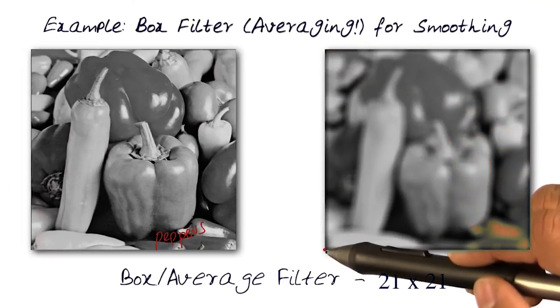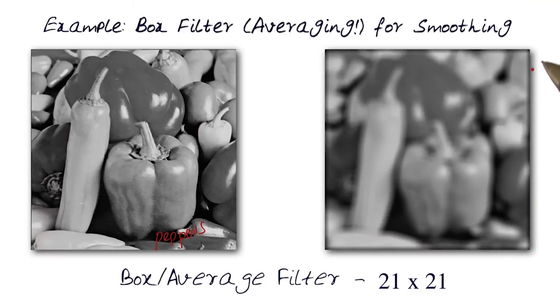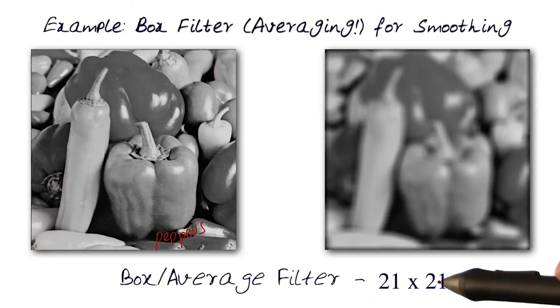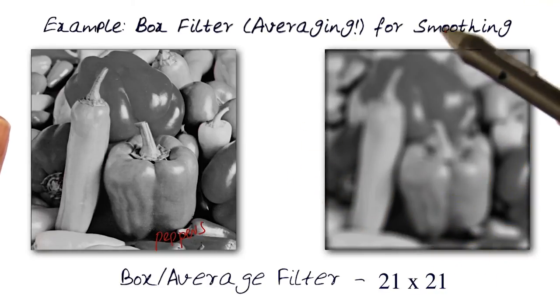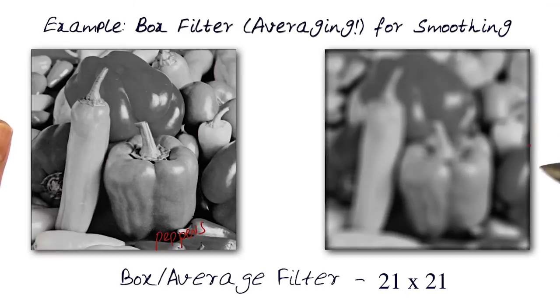Also notice the edges. This is what I was referring to earlier, because what we're doing is, we're adding information, some of the information will be lost. And in this case, to do a 21 by 21, about 10 pixels were added on all three sides. And of course, the average of this does degrade information at the edges.